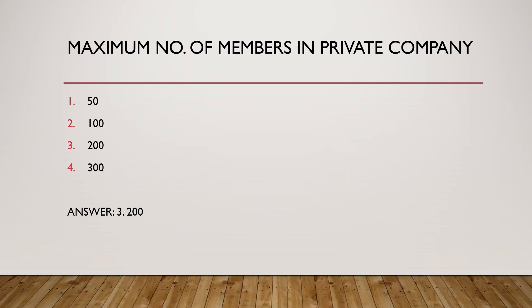Next question: Maximum number of members in a private company. As per the Companies Act 2013, the minimum number of members required is two and the maximum is 200. In the old Companies Act 1956, the maximum limit was 50, but in 2013 it was changed to 200. So the answer is 200.